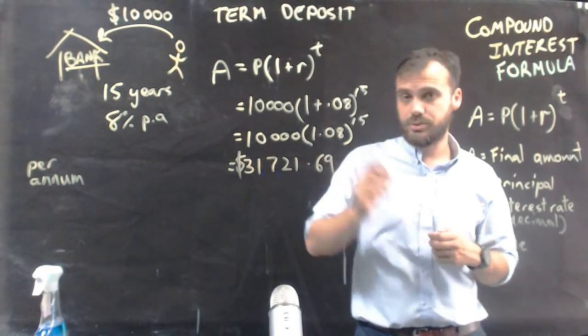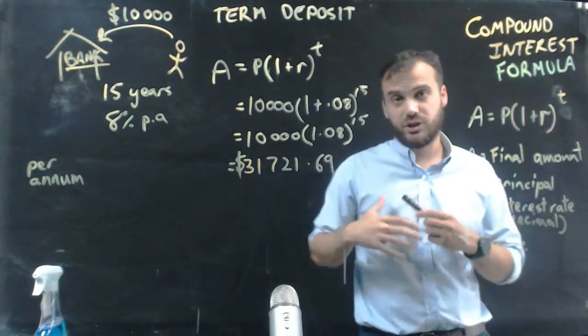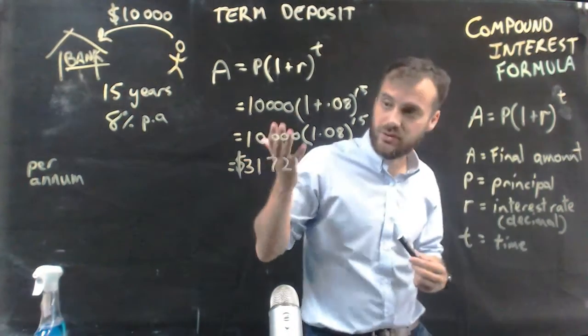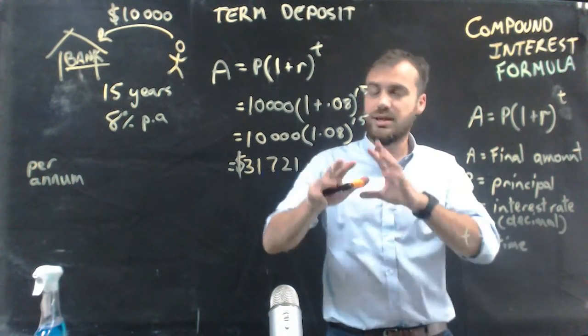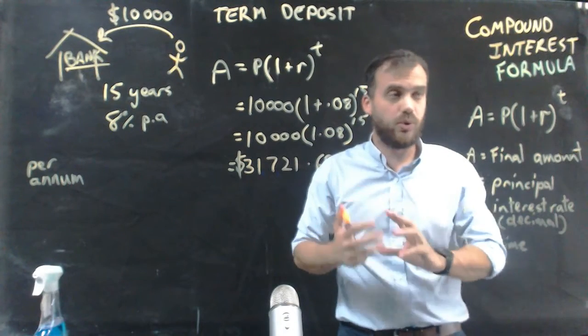Quite a bit of money. I started with $10,000 after 15 years. If I just leave it in my bank account, I'll have $31,721. I've tripled my money. That's compound interest. That's how the compound interest formula works.